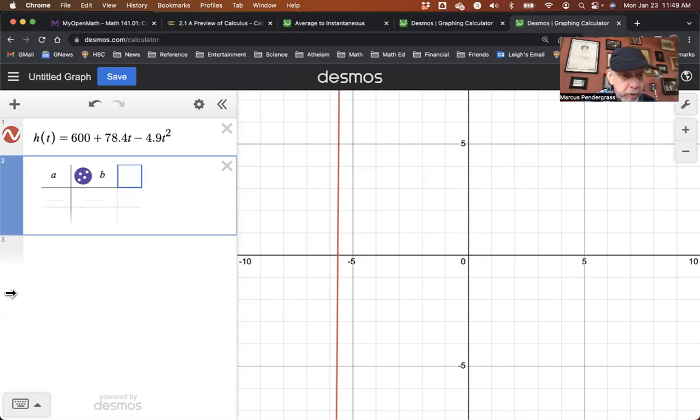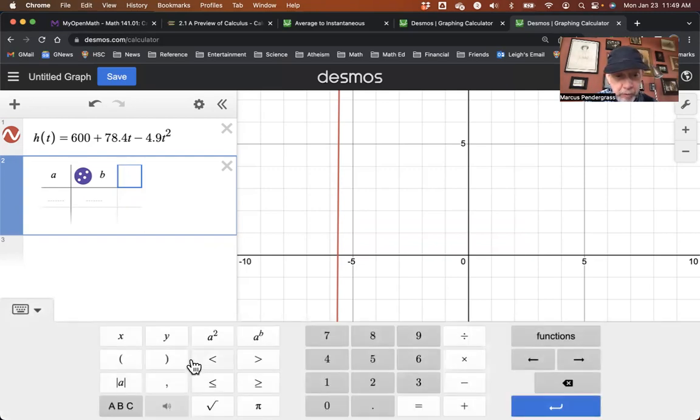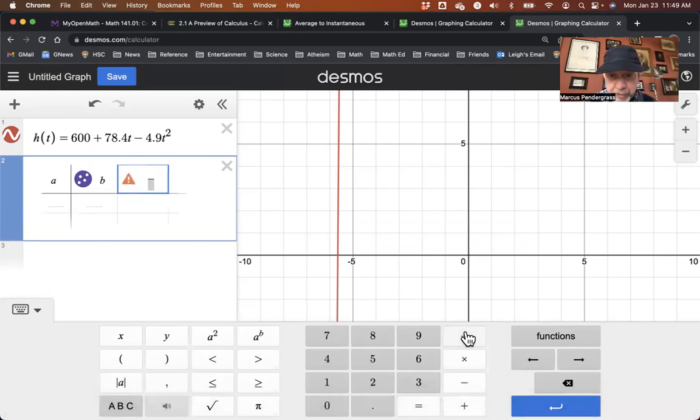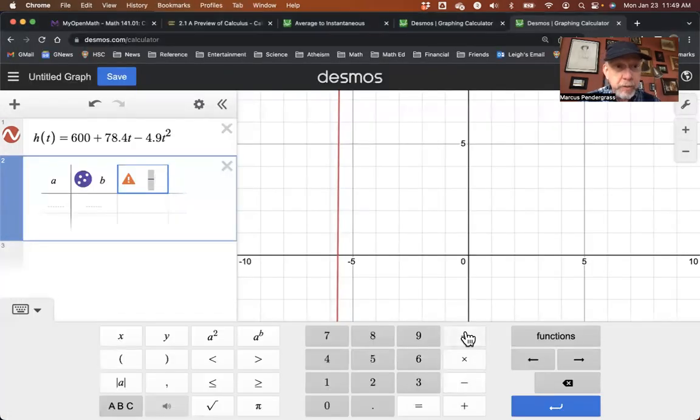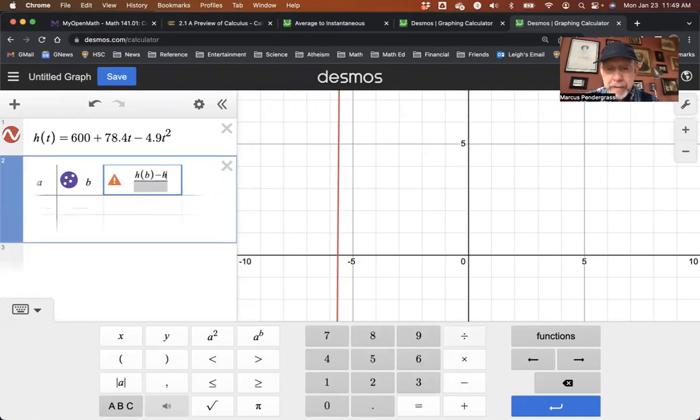So you can use the little keyboard here on Desmos if you like. I need a fraction, I need to divide something. So I hit the divide key. And then now my function is named H, so I want to use H as opposed to F. Even though the definition says F here, my function is called H, so I'm going to use H here. So in the top, it should be H of B minus H of A. And in the bottom, it should just be B minus A. So those are my headers.